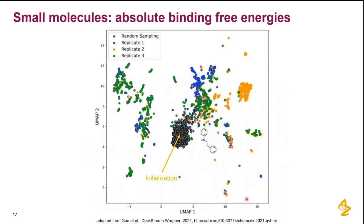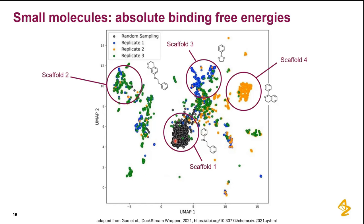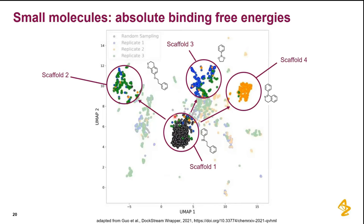Consider this UMAP embedding based on structural descriptors and fingerprints, representing chemical space — each dot is one compound, closer dots are more similar. Starting from one compound, using relative binding free energy methods we could access molecules within a certain circle around it. But what about the other scaffolds that might be interesting? Some jumps might just be too far for RBFE methods.